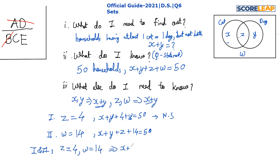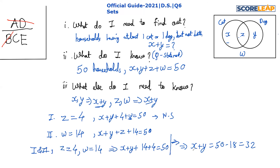Now combining both statements: z equals 4 and w equals 14. So x plus y plus 14 plus 4 equals 50, giving us x plus y equals 32. In the examination, we stop here — we don't need to find x and y individually. The two statements together are sufficient to answer the question, so we cross out option E and the correct answer is C.